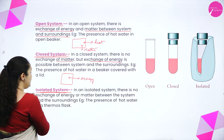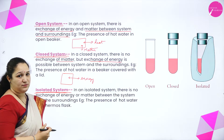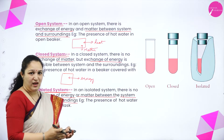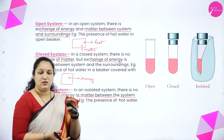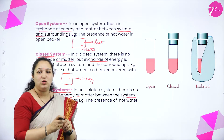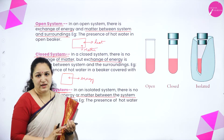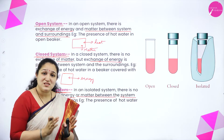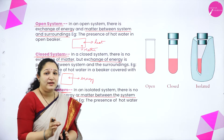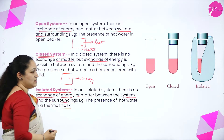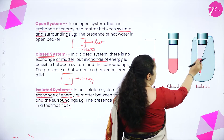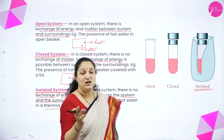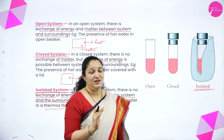Next is the isolated system. There is no exchange of energy or matter between the system and the surrounding. If I take the same hot coffee and pour it into a thermos flask and keep it tightly closed — matter is not exchanged because it is completely closed, and because the thermos flask is insulated, even heat is not exchanged. Such a system is called an isolated system. Example: hot water in a thermos flask. So these are the three types of system.